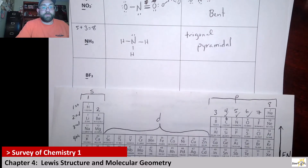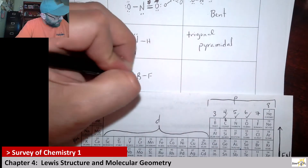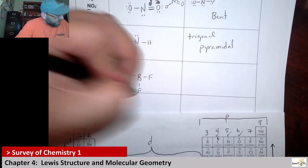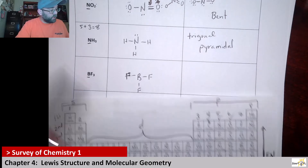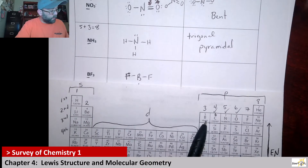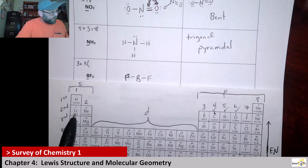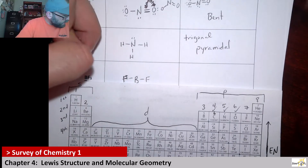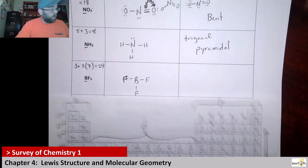Next up we have BF3. We start with boron and three fluorines. When we look at our valence electrons, boron has three, and then we have three fluorines, each with seven. So three times seven is twenty-one plus three gives us twenty-four total valence electrons.